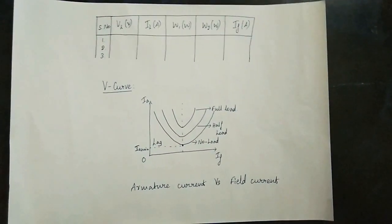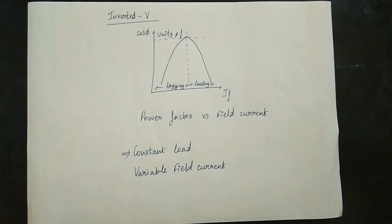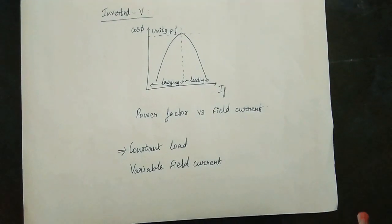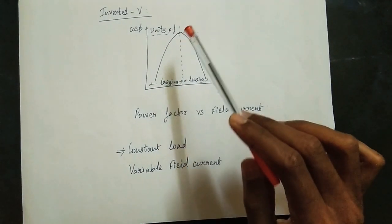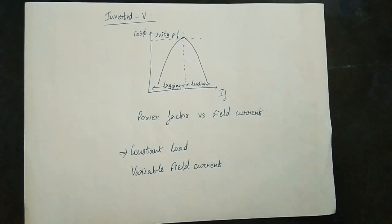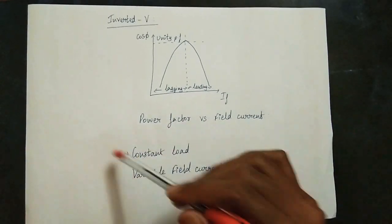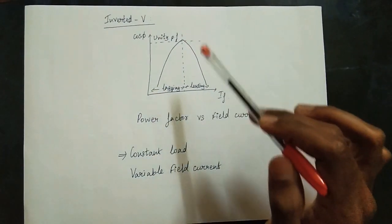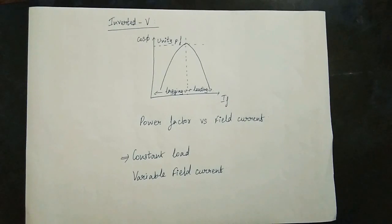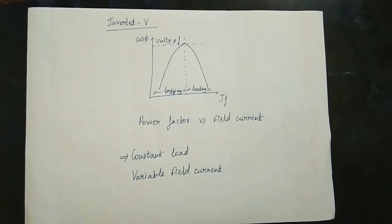The V curve plots armature current versus field current. Now, for the inverted V curve, we plot power factor (cos φ) versus field current. The power factor varies with the field current. The unity power factor point is the critical excitation, which is the peak point of the inverted V curve. There is an increase and then a decrease on the curve — hence this is the inverted V curve.